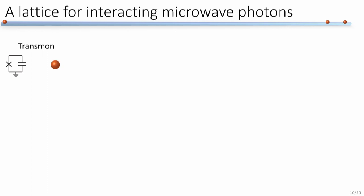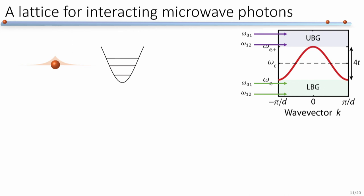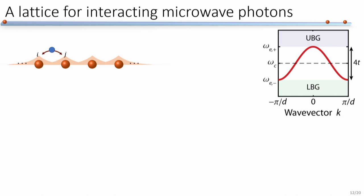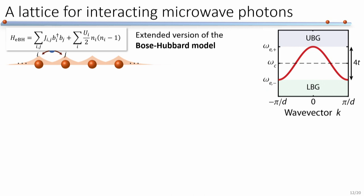Now we can explore what Hamiltonians we can implement with this device. The transmon qubit is an anharmonic oscillator. When coupled to the waveguide in the band gap, the qubit-photon bound state inherits this anharmonic level structure, so it can be viewed as a bosonic site for microwave photons. The energy to put one microwave photon in differs from putting in a second, giving us an on-site interaction term. When multiple sites are coupled, we get hopping of microwave photons between sites. Combining both terms gives us an extended Bose-Hubbard model — extended because the standard model has only nearest-neighbor hopping.